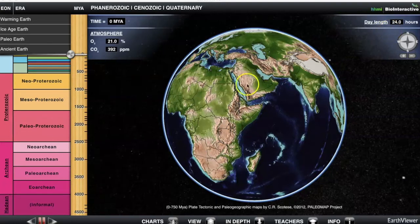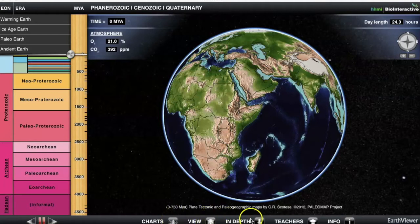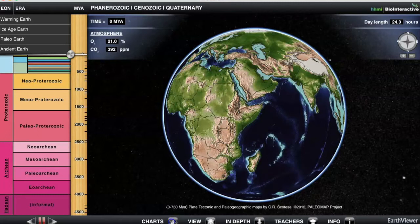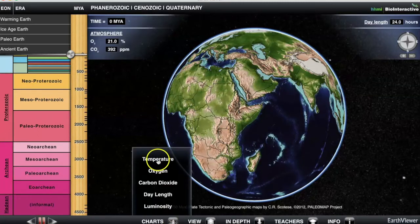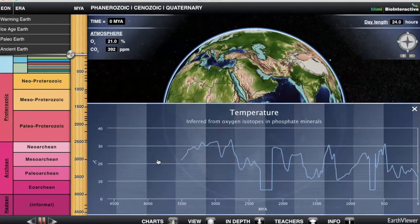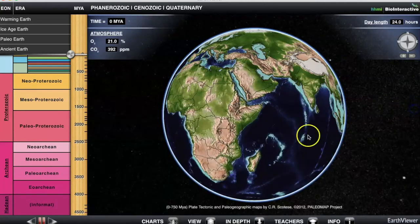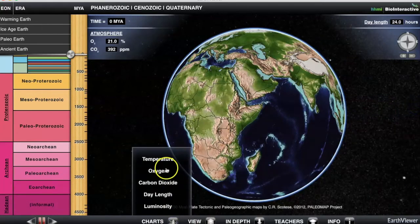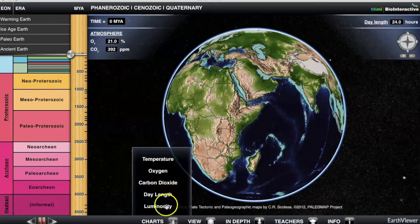Over on the right corner up here, we notice that the day length is now 24 hours. It might surprise some people that the day length of our planet was not always that. There are some other really interesting options at the bottom. You'll notice it says charts, view, in-depth. Let's look at charts. When I click on charts, you'll notice that I can look at the temperature of our Earth over time. I can also look at the free oxygen, carbon dioxide in the atmosphere, the day length, luminosity.